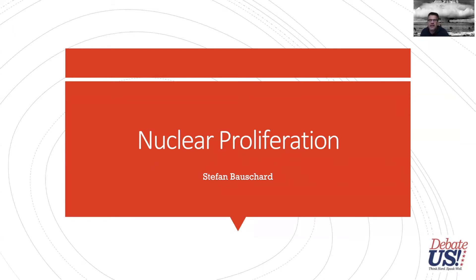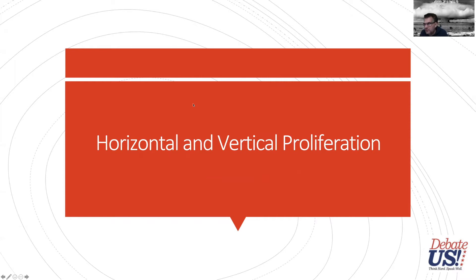Technically, there are two types of proliferation. Proliferation is a general term that refers to the spread of something — you see this term used in biology a lot. In the context of international security, it's usually talking about the spread of nuclear weapons.